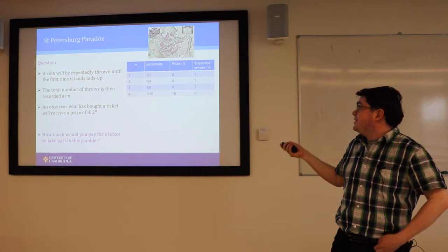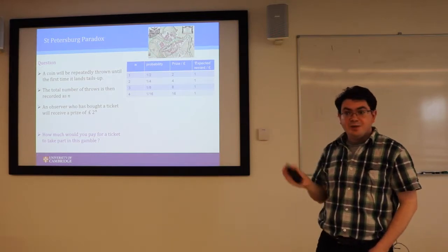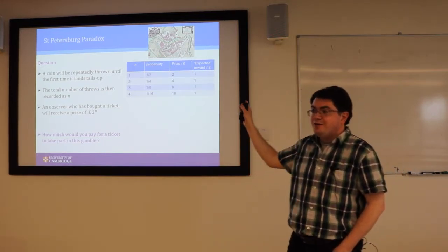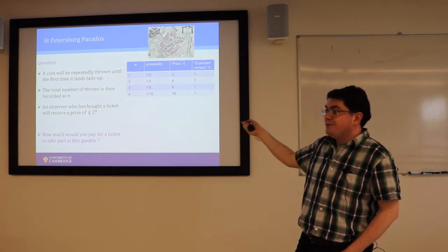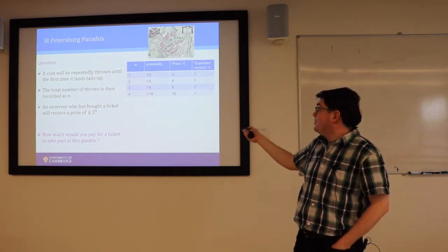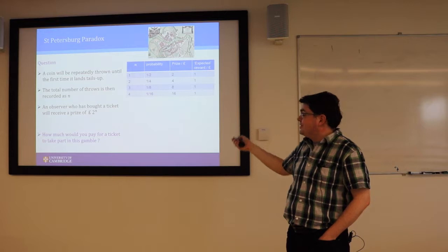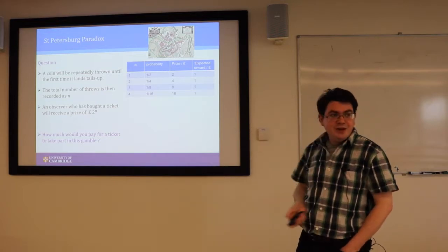So for the first possibility, you have this concept of an expected reward. That's the long-run average that you would get from this particular outcome if it was done repeatedly. A pound for the first outcome, a pound for the second outcome, a pound for the third outcome, and so on.